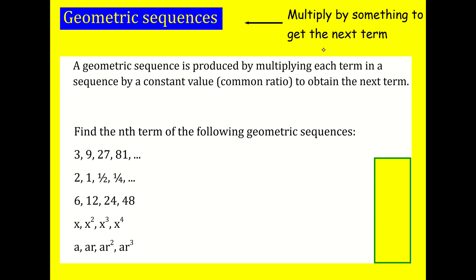A geometric sequence is produced by multiplying each term in a sequence by a constant value — a common ratio between each term. For example, 2, 4, 8, 16 is a geometric sequence. We're just doubling it every time, and the common ratio here would be 2.